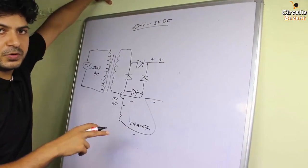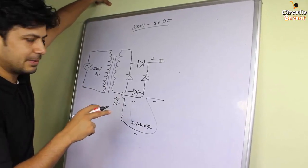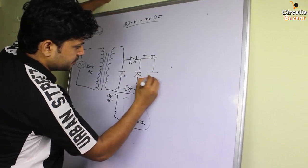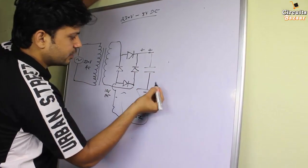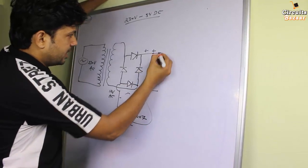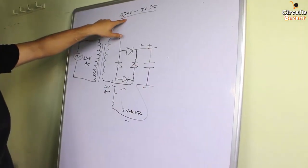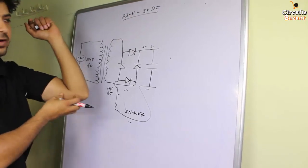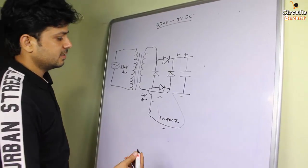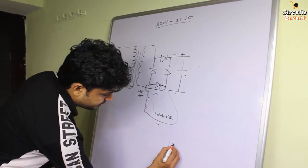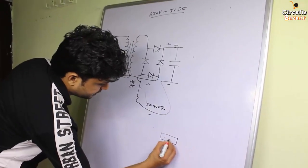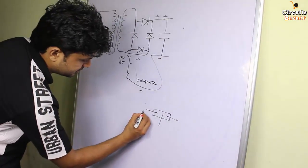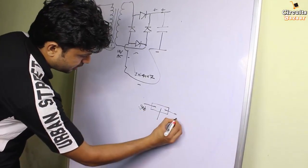As you know, the output of the rectifier is not pure DC — it has ripple as well as fluctuations. So you have to use a capacitor as a filter. Now, our main purpose is to convert 230 volt AC into 5 volt DC, so for that you have to use a voltage regulator. There are many voltage regulators available — for example, the 7805. This is the basic configuration: input, output, and ground.